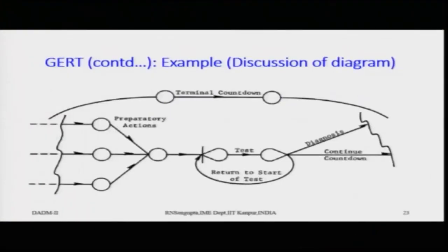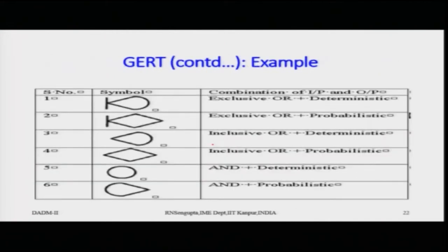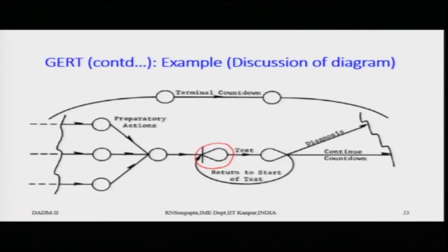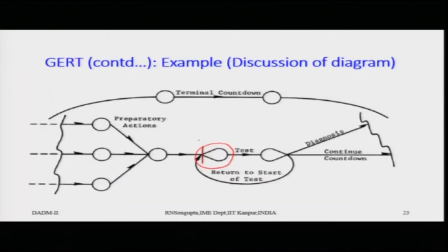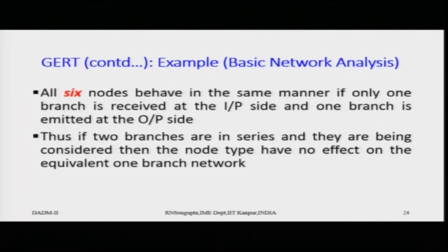Considering this concept, this is an inclusive OR or a deterministic node depending on how the nodes have been formed. In this case also it is an inclusive OR or return OR. Here it is OR 1, which means the first case is exclusive OR and the second case is inclusive OR.